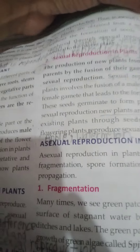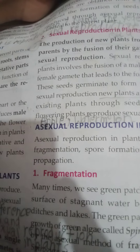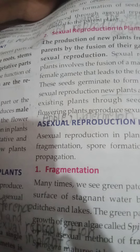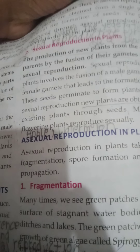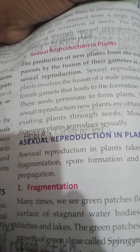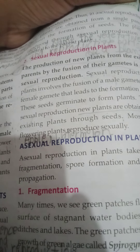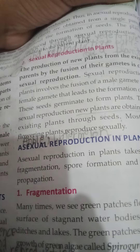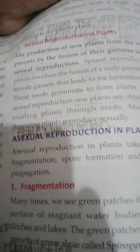Sexual reproduction in plants is the production of new plants from existing parents by the fusion of their gametes. In sexual reproduction, there are two parents involved.